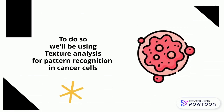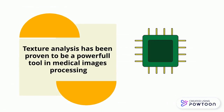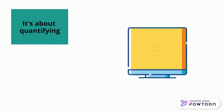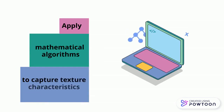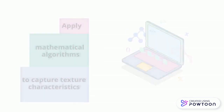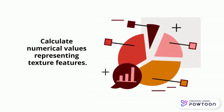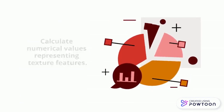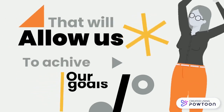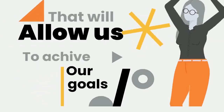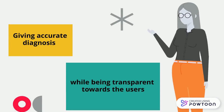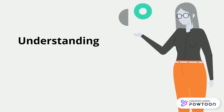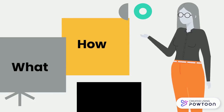To do so, we'll be using texture analysis for pattern recognition in cancer cells. Texture analysis has been proven to be a powerful tool in medical image processing. It's about quantifying and understanding the rich textures within medical images, applying mathematical algorithms to capture texture characteristics, and calculating numerical values representing texture features — allowing us to achieve our goals of giving accurate results while being transparent towards users, understanding the how, what, and why.